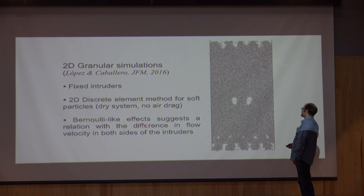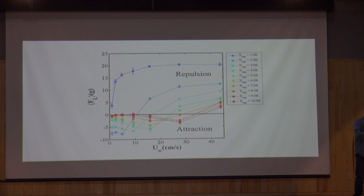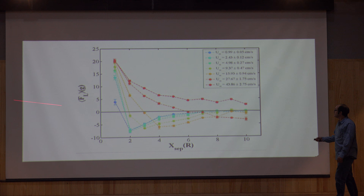Here is a video of what's going on — the tapioca is flowing around the intruders, and this example shows repulsion. These are the results: the lift force as a function of the flow rate for different values of separation. We see that if the flow is more intense, we go from attraction to repulsion — then the grains jam trying to cross the space between the intruders. This is also the lift force as a function of the separation of the intruders for different upstream velocities, showing the repulsion and attraction regimes. There are some hydrodynamic solutions shown for comparison.